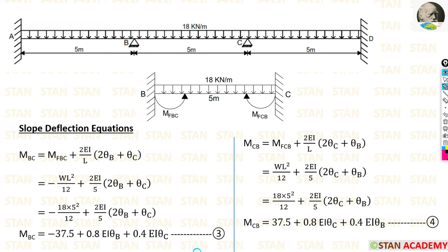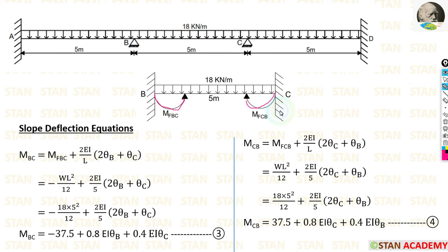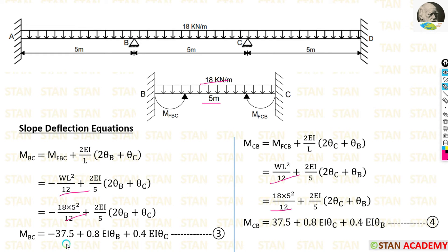Now we make the slope deflection equations for span BC. The same UDL acts over the full span, so the fixed end moment formulas are the same. M_BC is negative (anti-clockwise) and M_CB is positive (clockwise). With W = 18 and L = 5, we apply the values to both equations, giving us two slope deflection equations for this span.